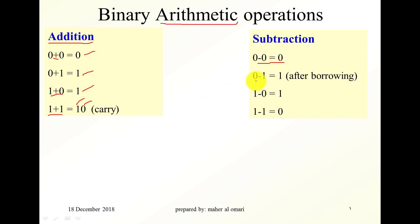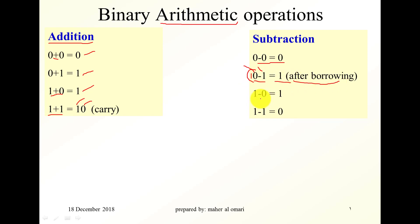For binary subtraction: zero minus zero is zero. Zero minus one is one, because this is less than one, so we have to make a borrow. After borrowing, zero minus one becomes one. One minus zero is one, and one minus one is zero.